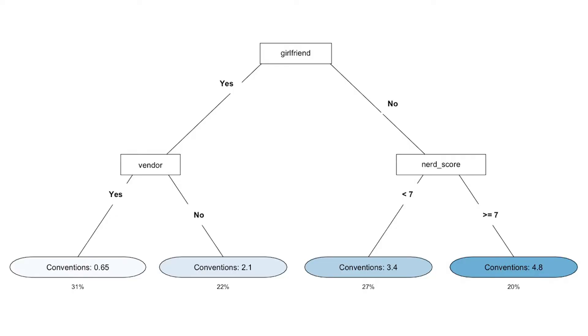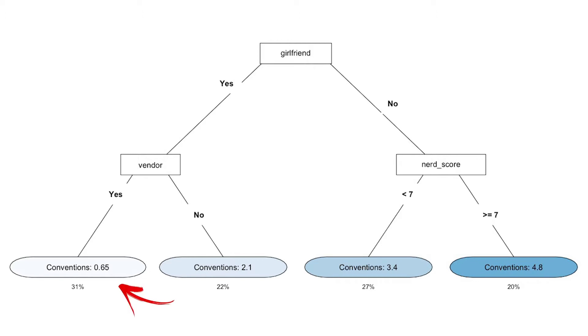That's the decision tree — and there are lots of algorithms to fit decision trees to data. In this example we had a binary outcome, but you can also use decision trees for numeric variables. Here we're trying to predict the number of conventions attended using three variables: whether you had a girlfriend, whether you are a vendor, and your nerd score. Going down one branch: if you have a girlfriend and you are a vendor, it estimates you've attended 0.65 conventions on average. On the other hand, if you have no girlfriend and your nerd score is greater than 7, we predict you've attended almost five conventions.